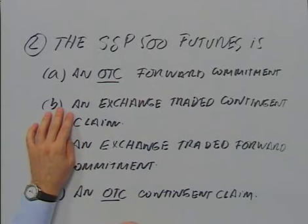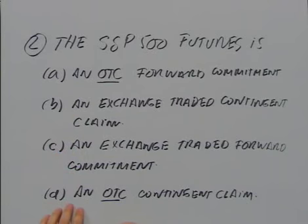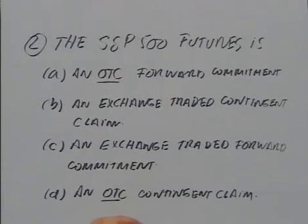The S&P 500 futures is: an OTC forward commitment, an exchange-traded contingent claim, an exchange-traded forward commitment, or an OTC contingent claim. The correct answer is an exchange-traded forward commitment. Remember that futures, by law, do have to trade on an exchange. And futures are also a form of a forward commitment — they're not a contingent claim. So they trade on an exchange and they're a forward commitment. The correct answer is C.